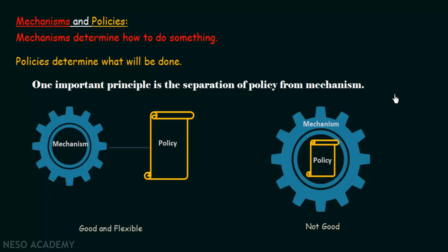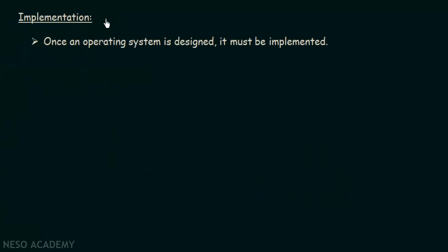After designing your operating system — including mechanisms and policies — the final step is implementation. Once an operating system is designed, it must be implemented. Traditionally, operating systems have been written in assembly languages, but now they are most commonly written in higher-level languages such as C or C++.